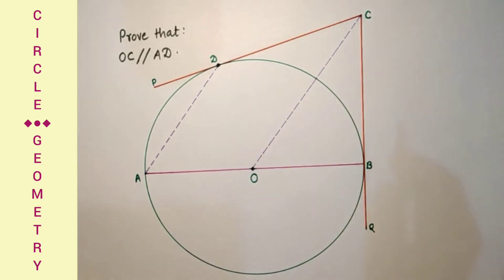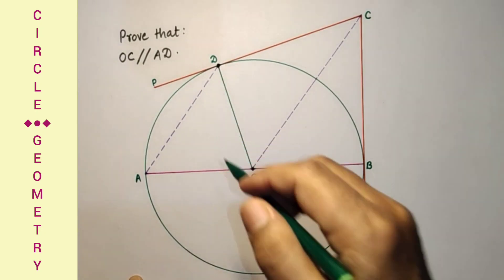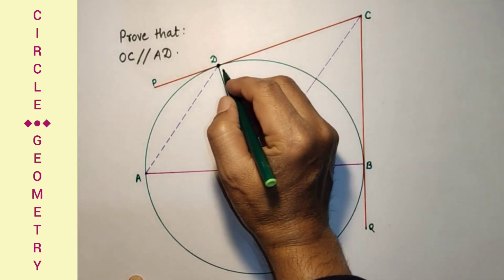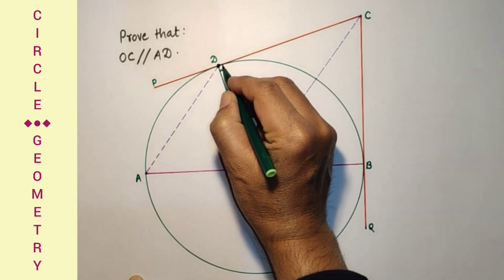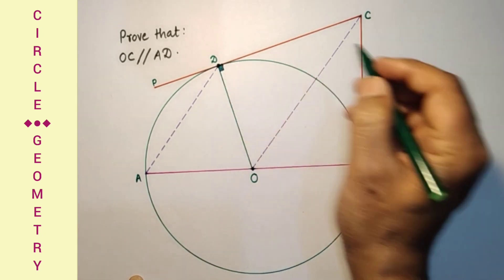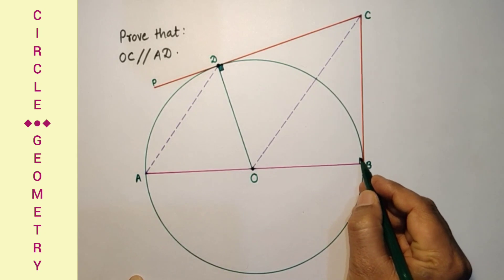Triangle ODC and triangle OBC will be right angle triangles and both will be congruent. OD joint, ODC angle will be 90 degrees, and this OBC is 90.